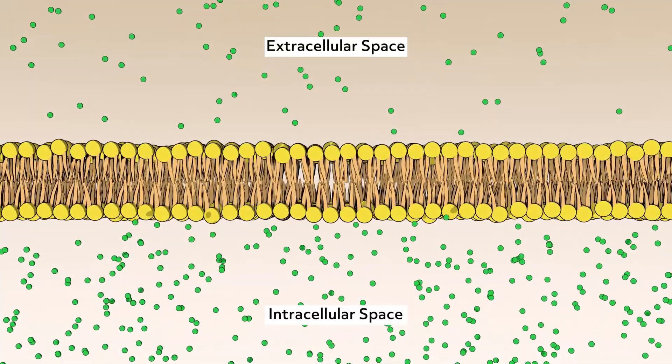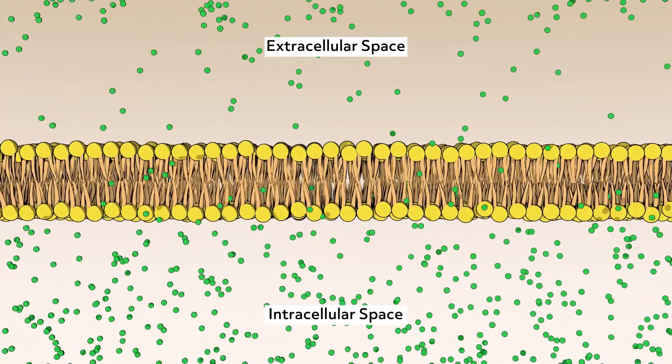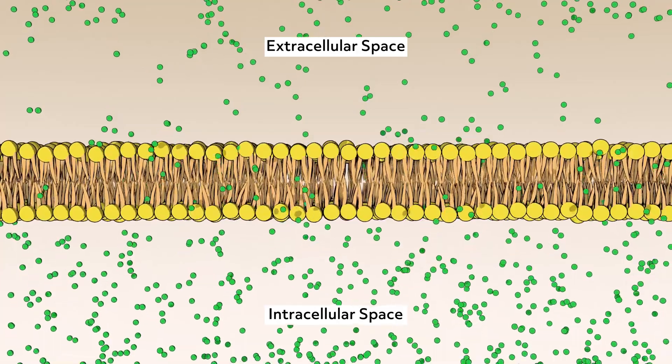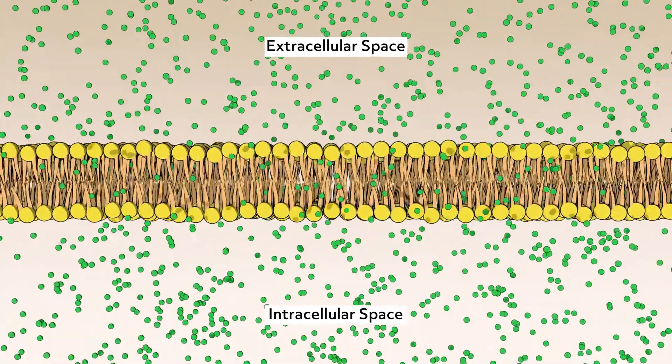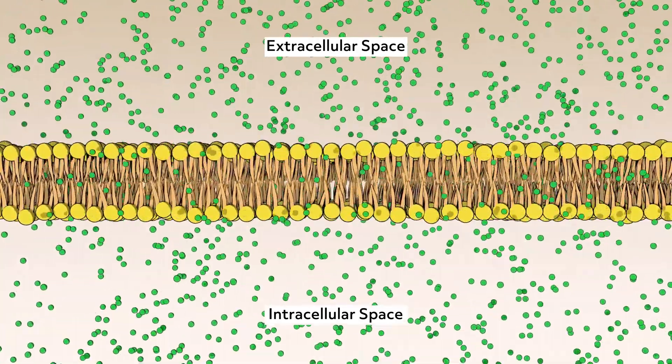Conversely, if the concentration of a substance is higher in the cell, the substance will diffuse out of the cell at a higher rate than into the cell. However, this type of simple diffusion is only possible for a small set of substances. After all, if every molecule could pass through the membrane, it wouldn't provide much protection for the cell.